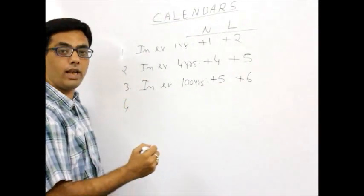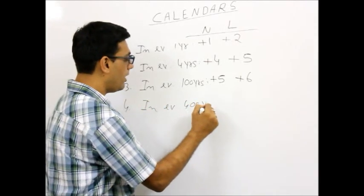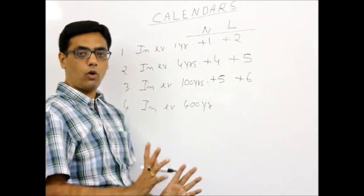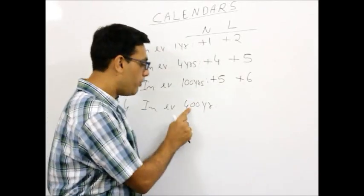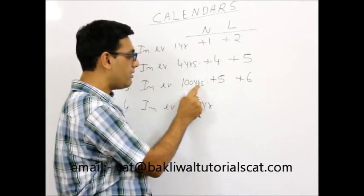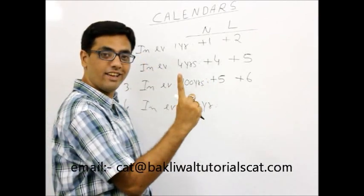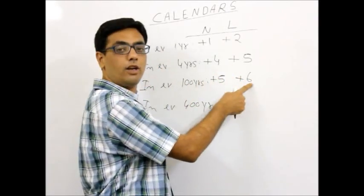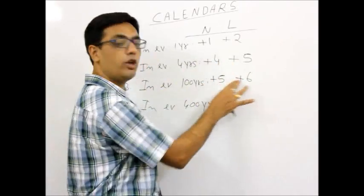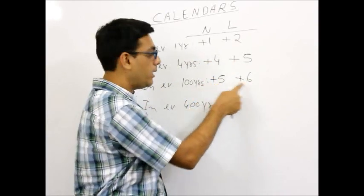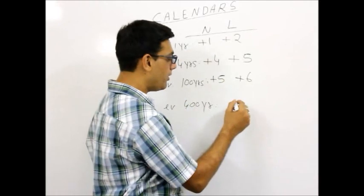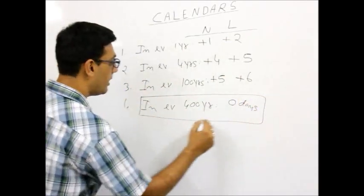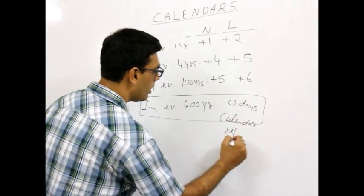Rule 4: what happens in every 400 years? In every 400 years you will get 3 normal centuries of 100 years and exactly 1 leap century. So you will have plus 5, plus 5, plus 5 and plus 6. That is plus 15 plus 6 equals plus 21. Plus 21 means 0 extra days because 21 is a multiple of 7. So in every 400 years the calendar repeats for sure.